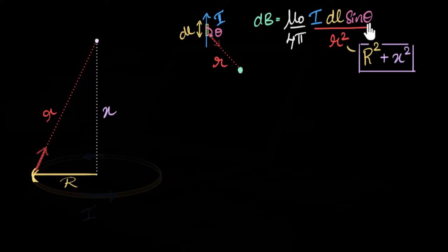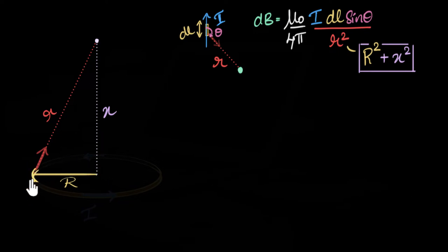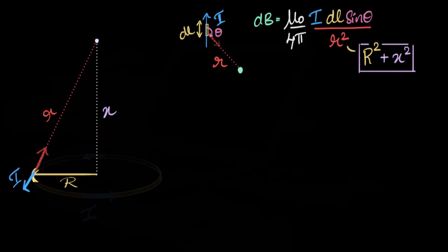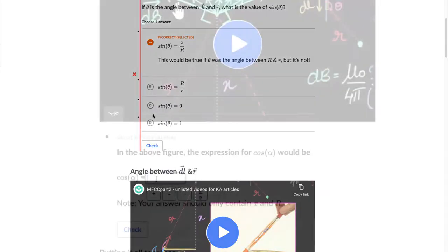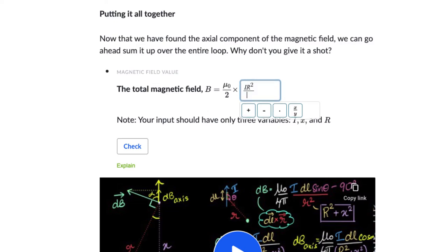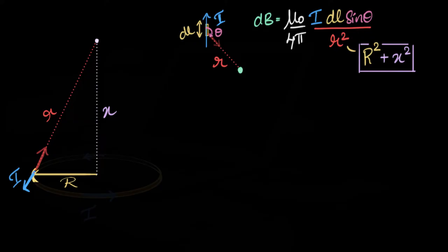The next thing we need to know is what is sine theta, and this is the part that always confused me. Theta is the angle between the DL vector — which is the same direction as I — and the R direction. In our case, because the current is flowing this way, at this point the current is directed out of the screen. So think about what that angle theta is going to be. I encourage you to pause the video and give this a shot before we continue.